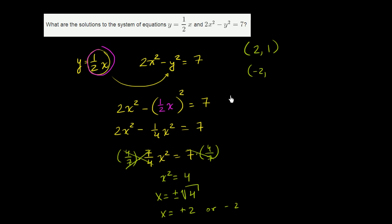If x is negative 2, then y is going to be 1 half times negative 2, which is going to be negative 1. And both of these definitely satisfy this first constraint. And you can verify that they also satisfy this second constraint.